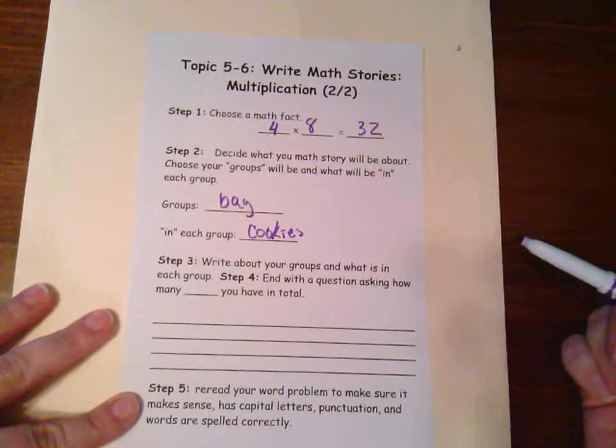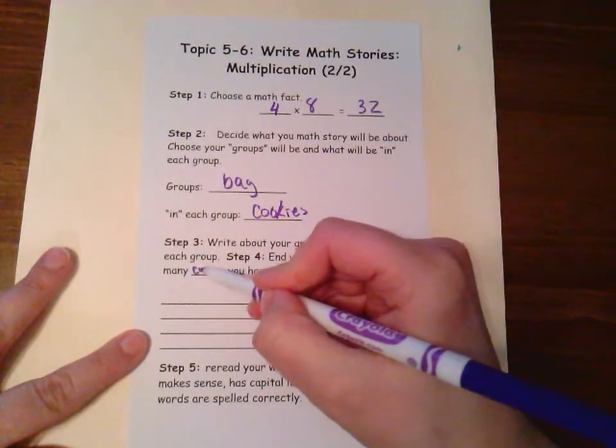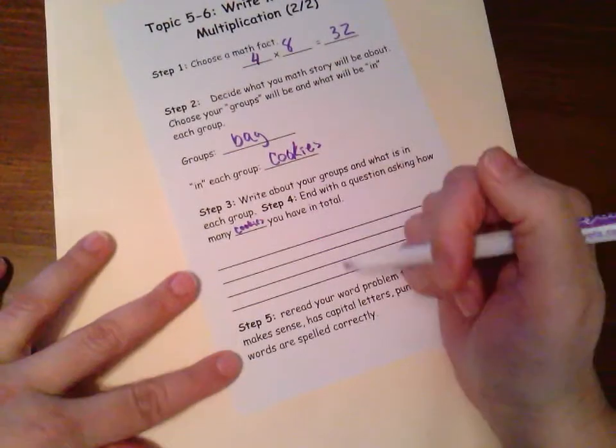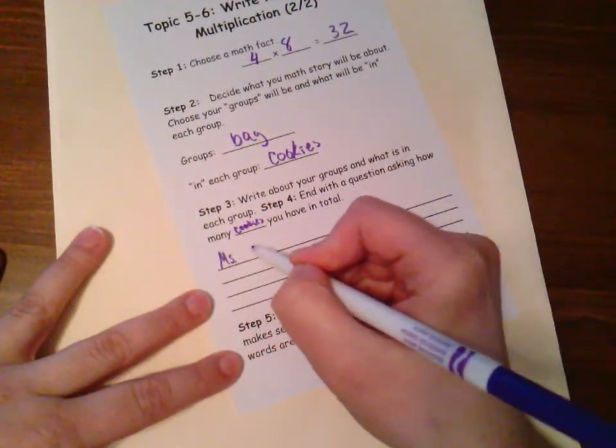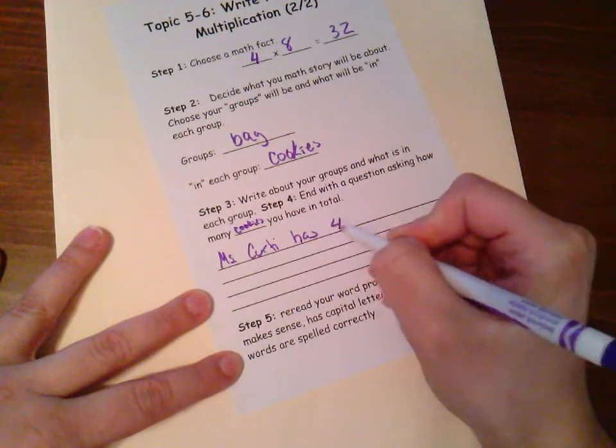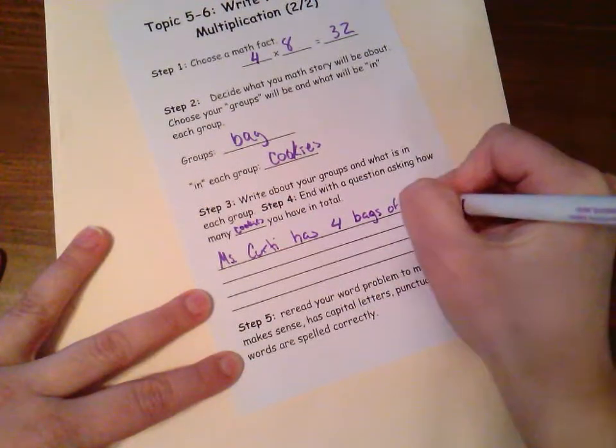Now write about your groups and what's in each group, and end with a question asking how many cookies I have in total. So let me go ahead and write about these bags of cookies. So Ms. Kurti has four bags of cookies,